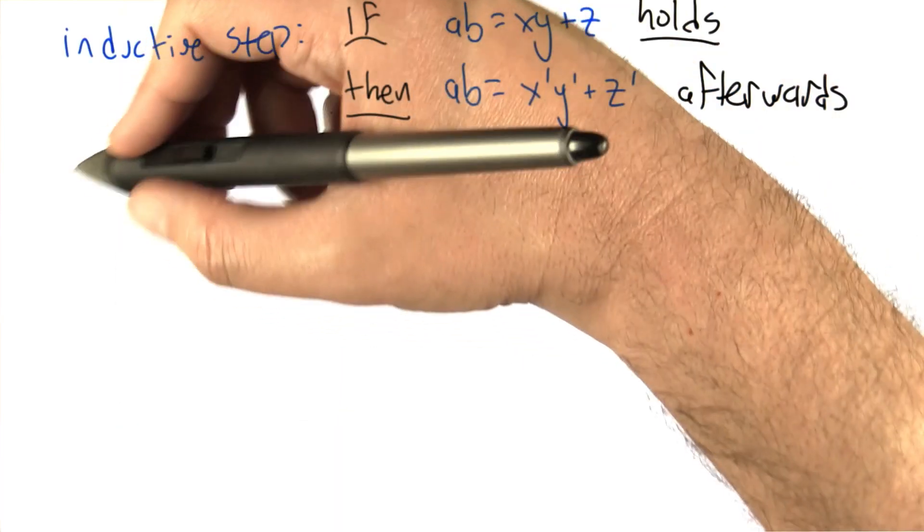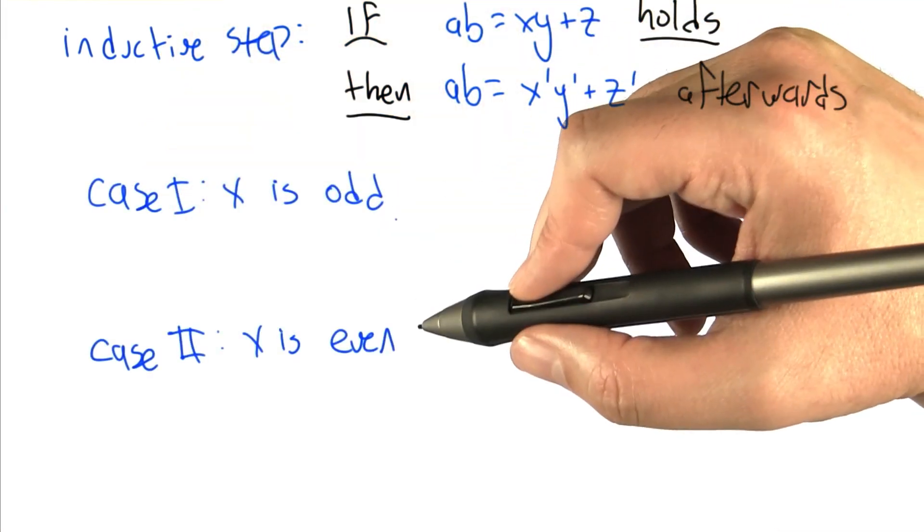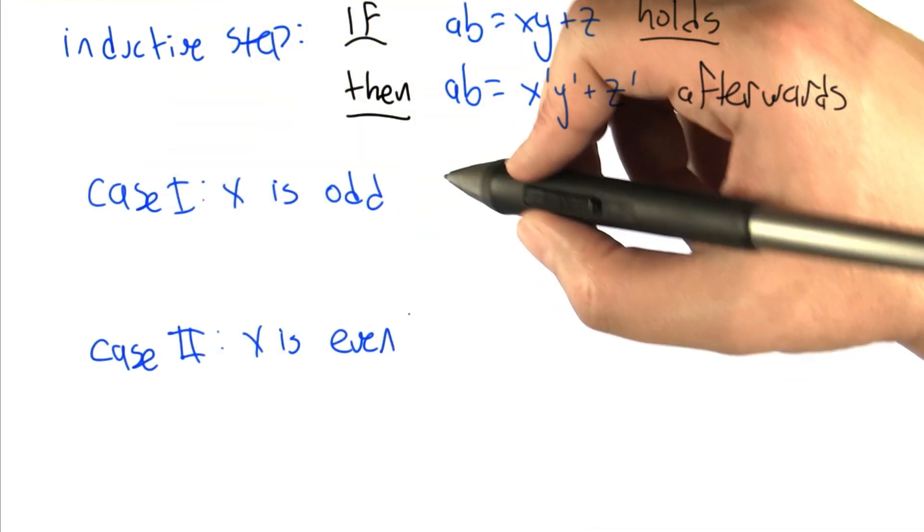And we're going to have to break this into two cases. First, if x is odd, and second, if x is even because two slightly different things happen.